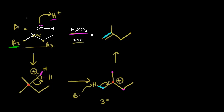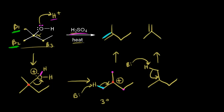Let's think about what would happen if we took a proton away from beta one. I'm going to draw the carbocation again. Beta one would be up here, so let me put in a proton on beta one. We think about a weak base — probably water — coming along and taking this proton, and these electrons would move into here. Our double bond would form up here. Notice that the two alkenes we just drew are really the same molecule — the same compound. So we haven't formed two different products. If you take a proton away from beta one or beta two, you're going to make the same alkene.